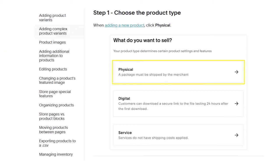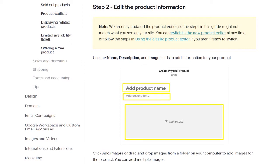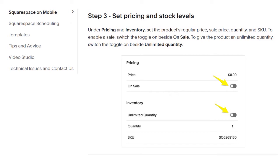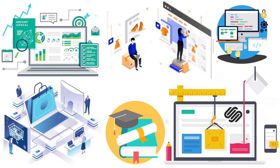Here are the steps you need to take to add products. Step one: choose the product type — physical, digital, or service. Step two: edit the product information. Step three: set pricing and stock levels. Step four: add the product variants — image, SKU, units, price, and sales price. Step five: add tags and categories. Remember that tags must be 80 characters or fewer, categories must be 25 characters or fewer, and tags and categories are case sensitive — very important.